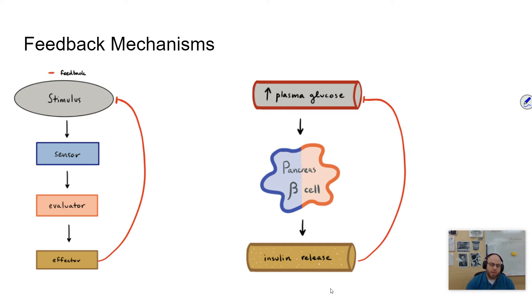And so there's some kind of stimulus there. There's a sensor that receives that stimulus. There's an evaluator. In our case, the evaluator is the brain. The brain evaluates the situation and then turns on some sort of thing.